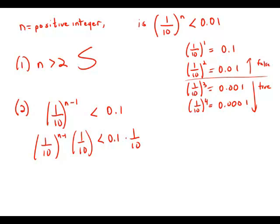On the left side, what we get is (1/10)^(n-1) times 1/10. And of course, we'll use the law of exponents that says a^m times a^n equals a^(m+n).